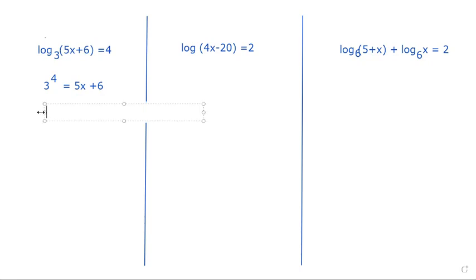3 to the fourth is equal to 81 is equal to 5x plus 6. Of course, we need to subtract 6 from both sides. That gives us 75 is equal to 5x. And when we divide both sides by 5, we get 15 is equal to x. It's just that simple. We want to take a logarithmic equation and change it into a basic algebra problem.